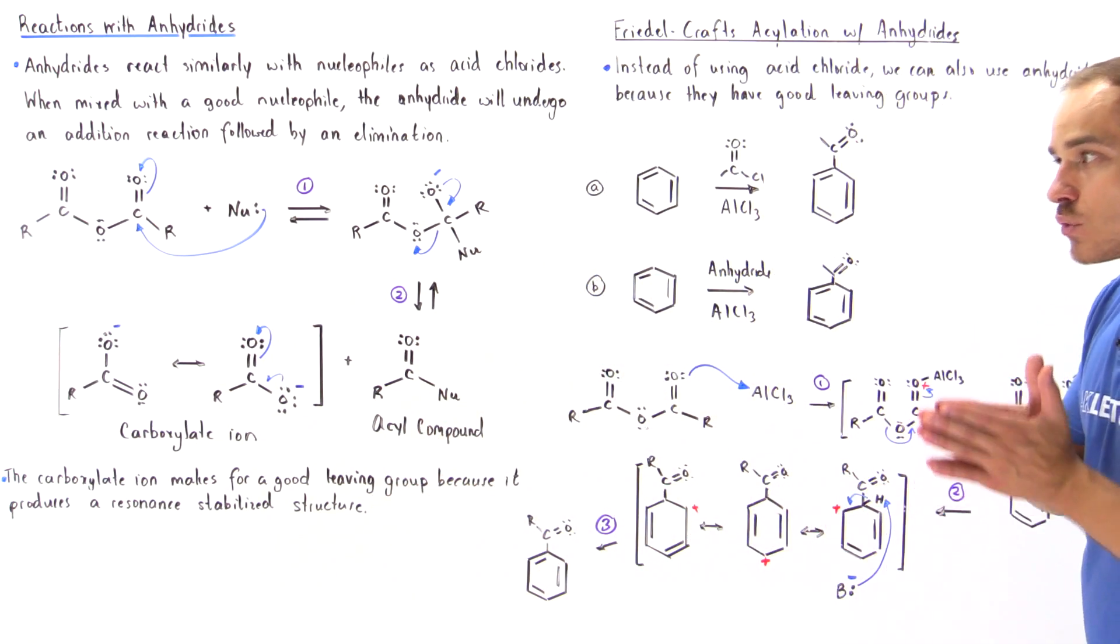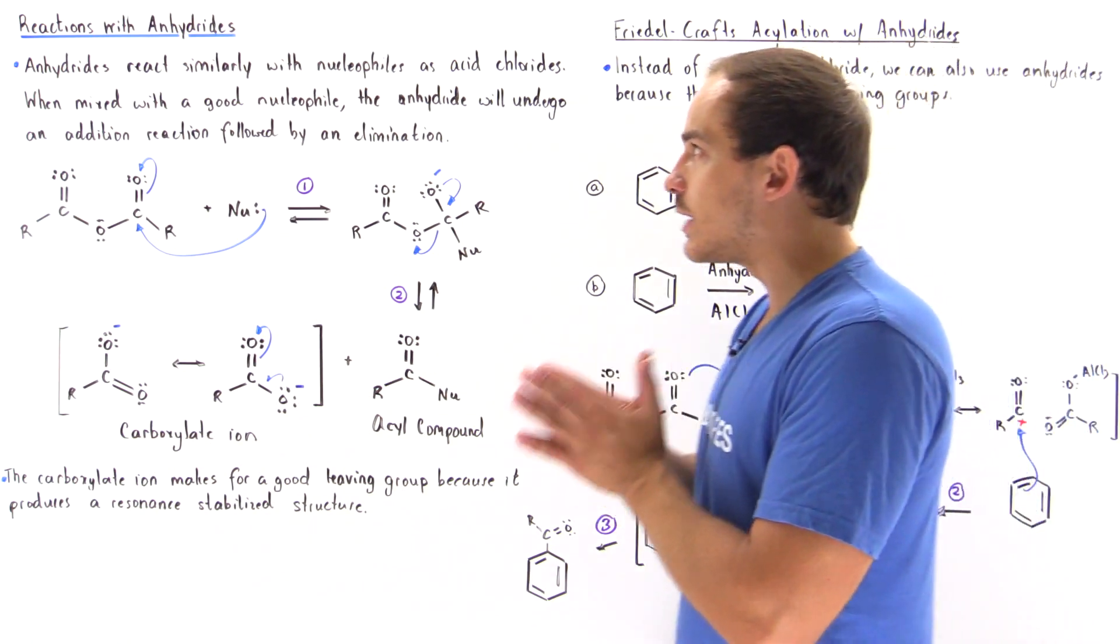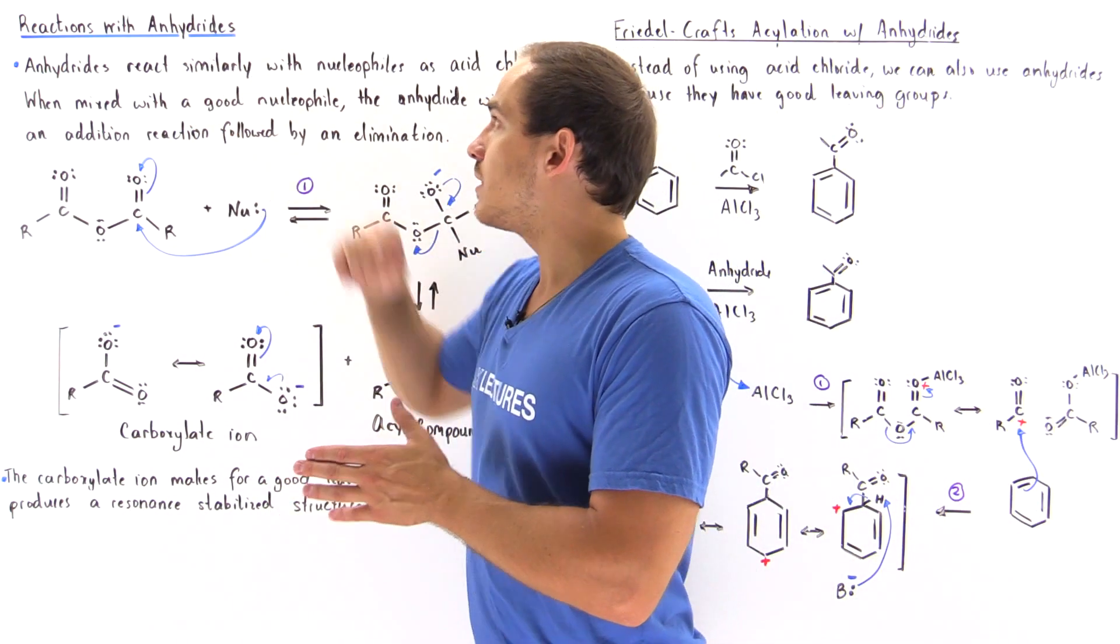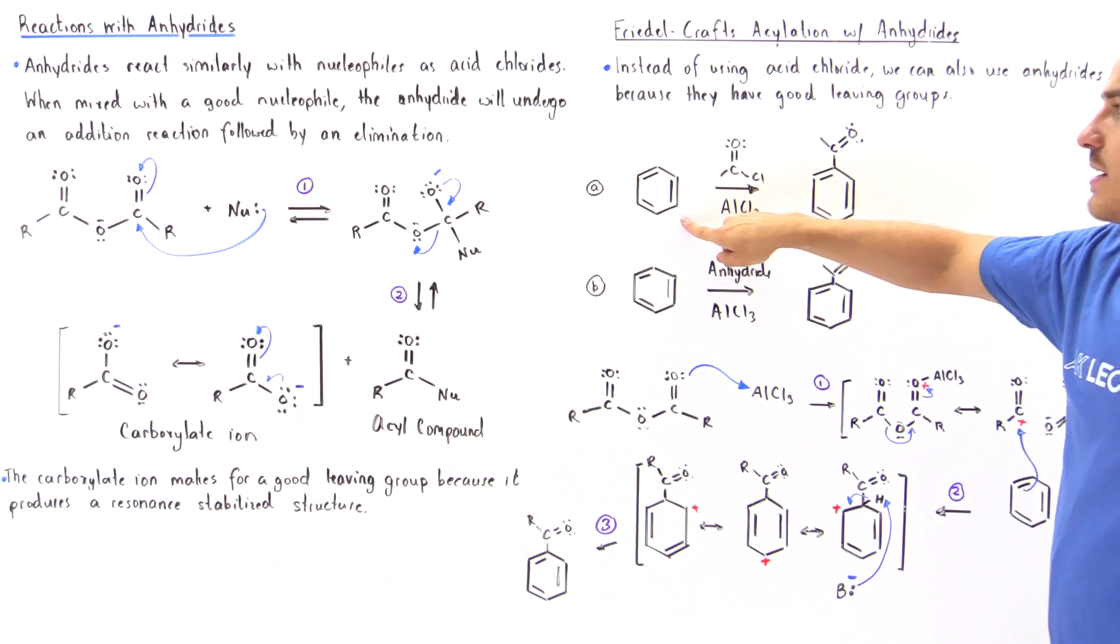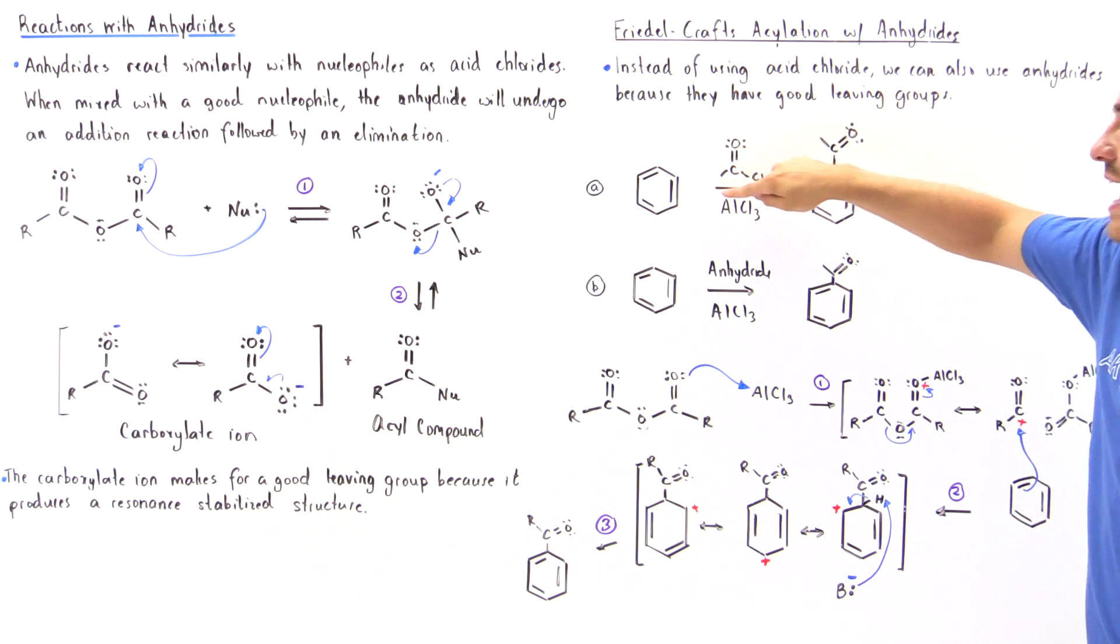Now we can actually replace the acid chloride with this molecule, our anhydride. So we said that if we take a benzene and mix it with the acid chloride in the presence of our aluminum chloride, we get this substituted benzene ring.